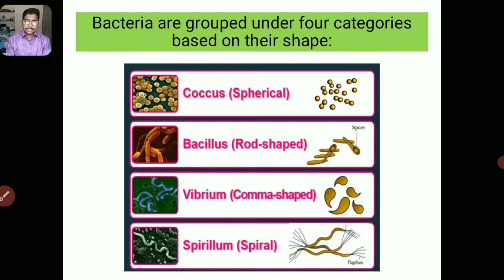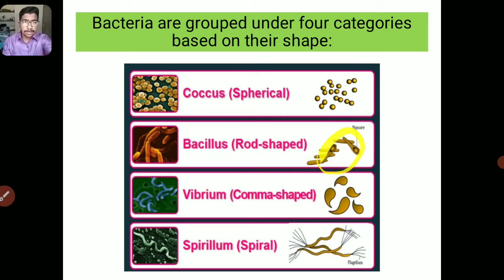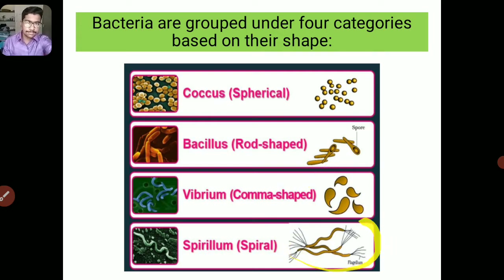Based on their shapes, the bacteria are classified into four categories: coccus, bacillus, vibrium, and spirillum. If you observe the picture — the coccus are spherical shaped. The bacillus are rod shaped. The vibrium are comma shaped, they look like a comma. The spirillum are spiral shaped structures.